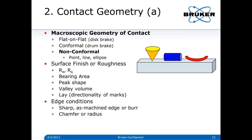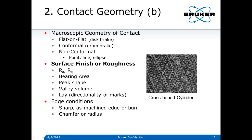Surface finish represents our microscopic geometry of contact. In this case, we worry about all the kinds of values you can measure: R_a (arithmetic mean roughness), R_q (root mean squared roughness), bearing area, peak shape, valley volume, and lay — the directionality of the marks. For example, a cross-honed cylinder has a deliberate roughness to carry lubricant as the ring passes over it, keeping that interface lubricated. So surface finish in the micro geometry is important.